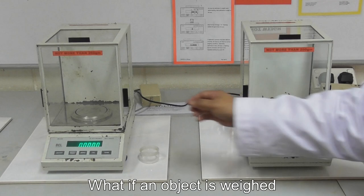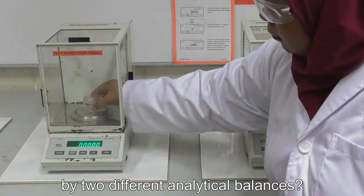What if an object is weighed by two different analytical balances?